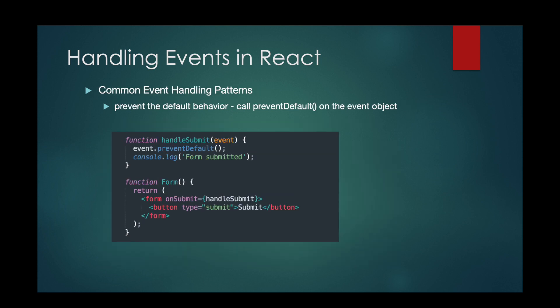Common event handling patterns. Prevent Default Behaviour: To prevent the default behavior of an event, such as submitting a form or following a link, you can call preventDefault on the event object. In this example, inside the function handleSubmit, the first line is event.preventDefault, which stops the form from being submitted when you click the button.